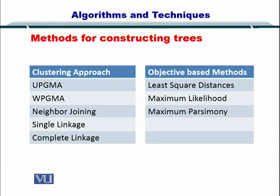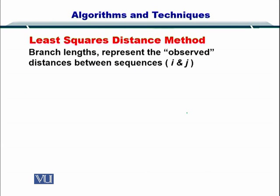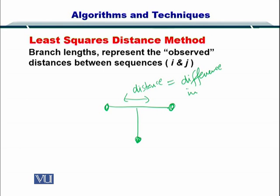The next method I will be introducing you to is the least squares distance method. We will be looking at this in detail later, but this is just to introduce you to the concept. The least squares distance method essentially means that the distance between two species is equal to the difference in their sequence — meaning the insertions, deletions, mutations, and substitutions that have occurred. You can find these by doing pairwise sequence alignment.